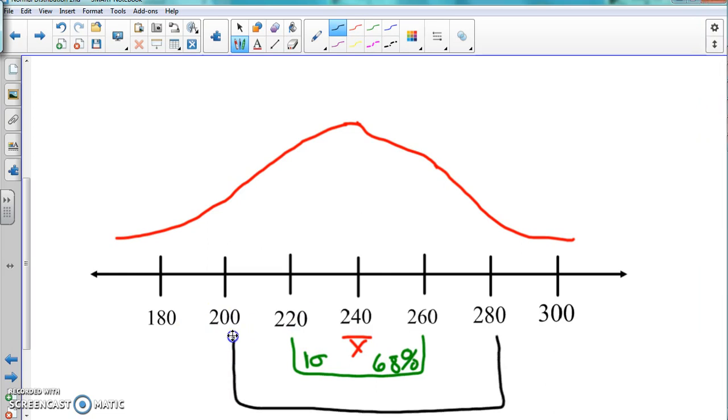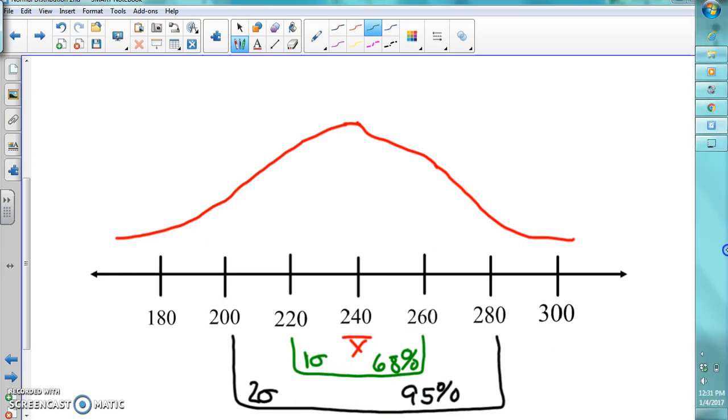We said this was two standard deviations because when we did X minus one standard deviation, X minus two standard deviations, this was the twos. What was the percentage? 95 percent.